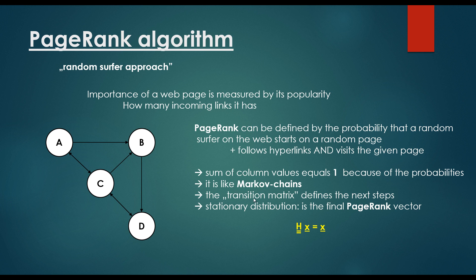It's very very similar to Markov chains. The transition matrix defines the next step. We are standing at a given website, what's the probability that we visit the accessible web pages? Okay.